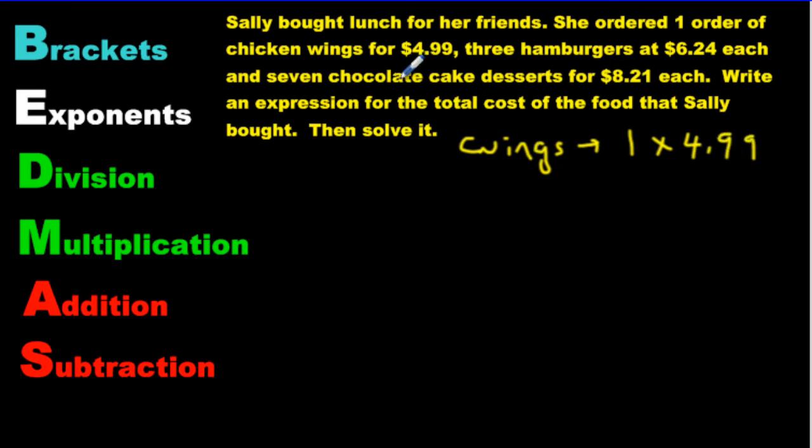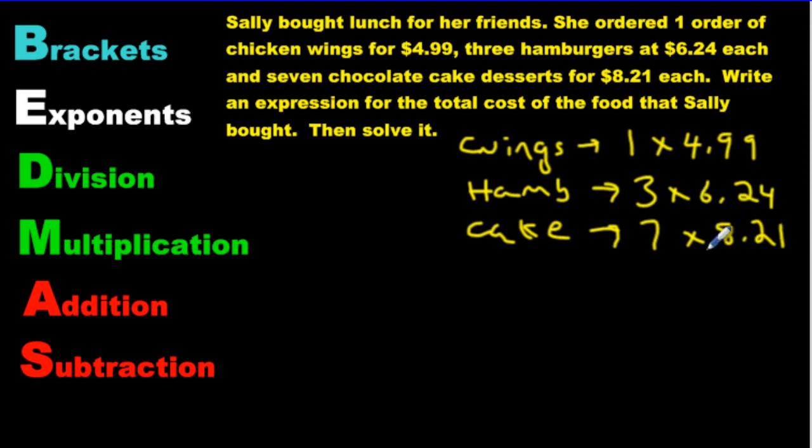Three hamburgers at $6.24. So let's write hamb. Just write hamb. She got how many? She got three. So three times $6.24. Now she got more stuff too. She got seven chocolate cake desserts for $8.21. Seven cakes. Okay, so we'll write cake. And that is going to be 7 times $8.21. Go ahead and write that. Write all of this down.